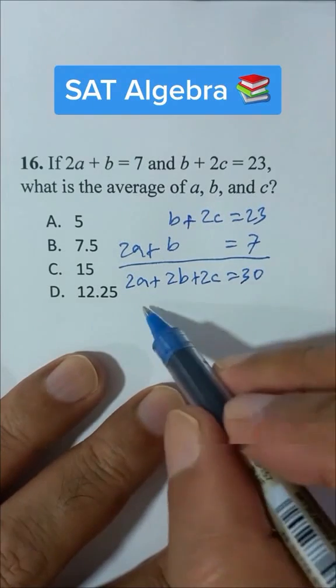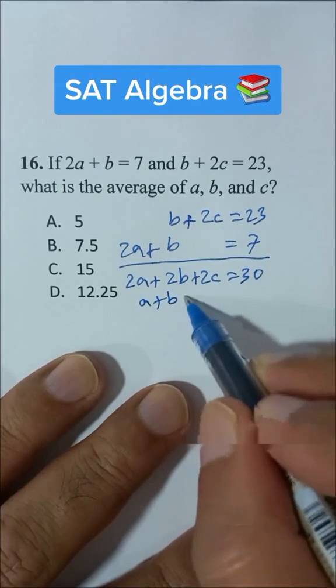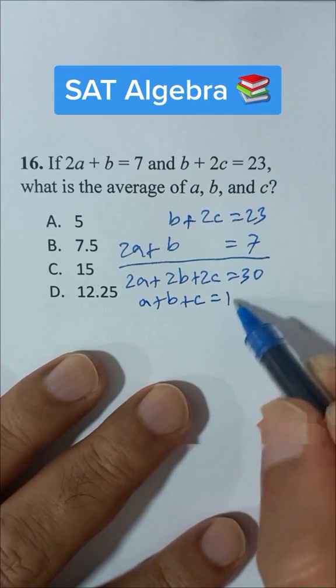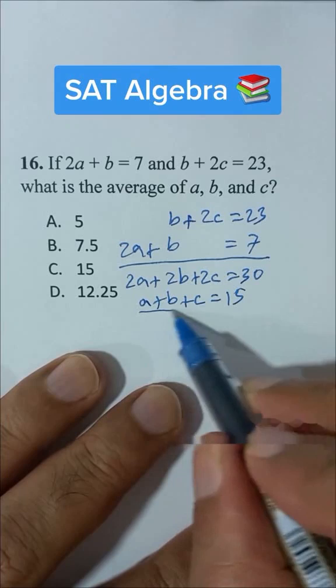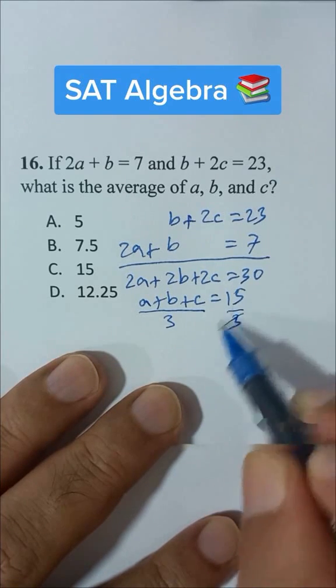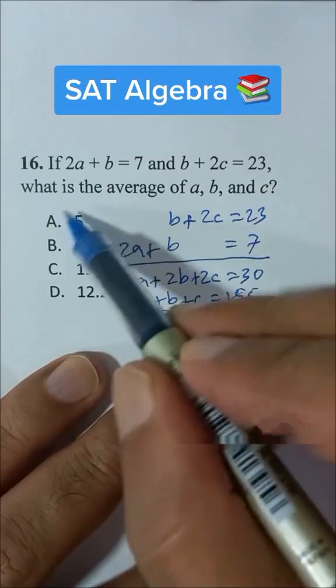every term by 2, I will get a plus b plus c is equal to 15. And to get the average of these three items, we have to divide it by 3. So 3 times 5 is 15. That's our